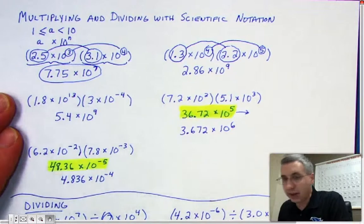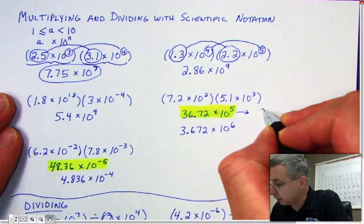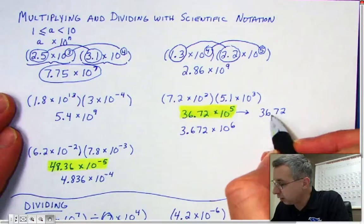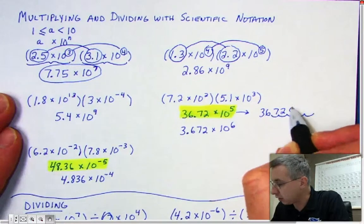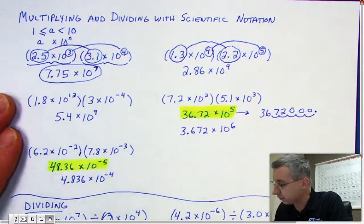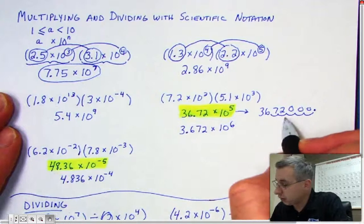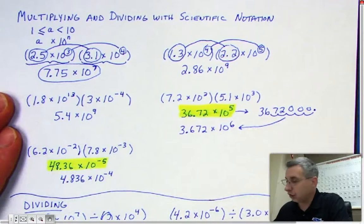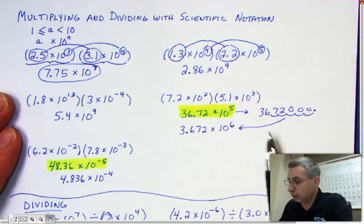The alternative way: just take the improper scientific notation and turn it into standard notation. So 3,6,7,2 — start with your decimal right here after 36 and go over 5 places: 1, 2, 3, 4, 5. You need to add three zeros. Now that it's in standard notation, turn it back into scientific notation using the procedure taught before, and you'll be sure to get the right answer.